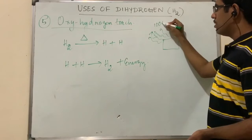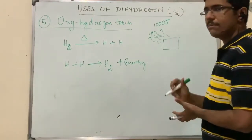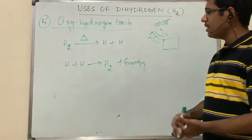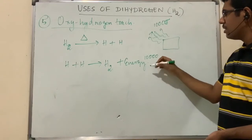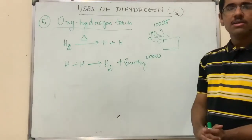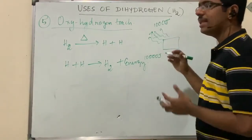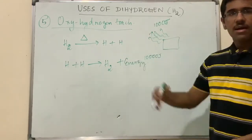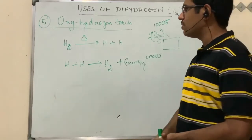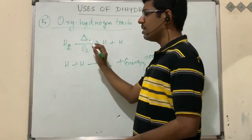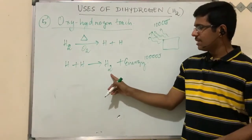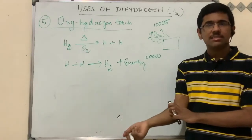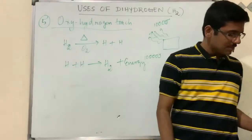Suppose the flame releases 10,000 joules of energy — some of that is used for breaking the hydrogen bond. When those hydrogen atoms quickly recombine to reform hydrogen gas, they also release a tremendous amount of energy, say another 10,000 joules. So the metal actually receives 20,000 joules while you only supplied 10,000. This extra energy release is why the oxy-hydrogen torch is so effective for welding — oxygen is needed for the burning, and the energy of recombination plus the flame energy together melt the metal very easily.